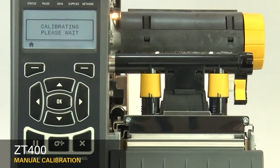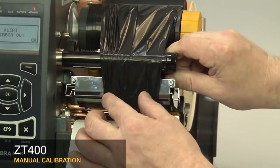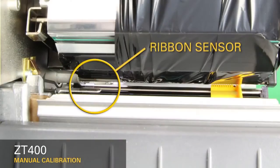When the printer has learned the correct settings, the display will show a reload all message. When reloading the media and ribbon, make sure the media and ribbon are fully inserted. Be sure that the ribbon is located under the ribbon sensor.